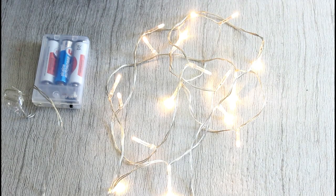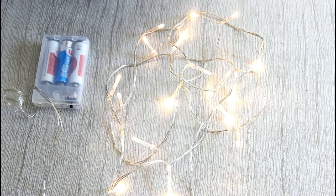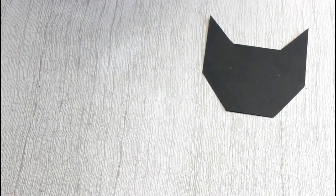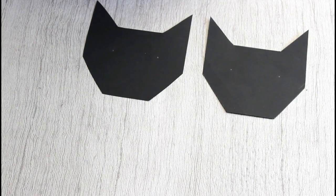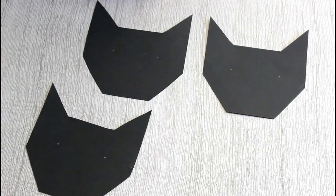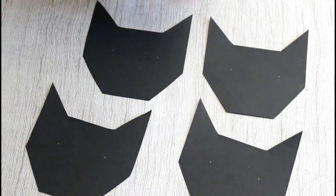For this last DIY, you're going to need an LED garland and black sheets. With the sheets, we're going to make geometric cat heads, really very simple to do. I found the model on Pinterest, but I'm still going to give you the measurements.